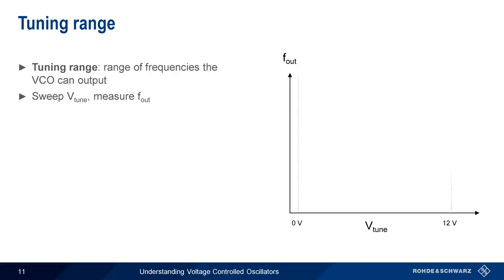we sweep the tune voltage between 0 and 12 volts and plot the output frequency as a function of tuning voltage. The difference between the minimum and maximum output frequencies is the tuning range.